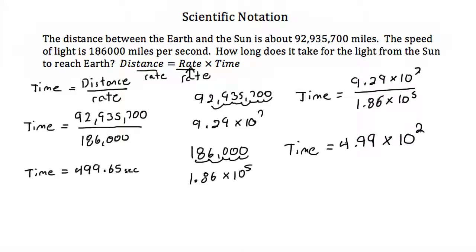So my time then is 4.99 times 10 to the 2nd in scientific notation. If I take that out of scientific notation, I just move my decimal back two more spaces and I end up with 499, which is what we had before.